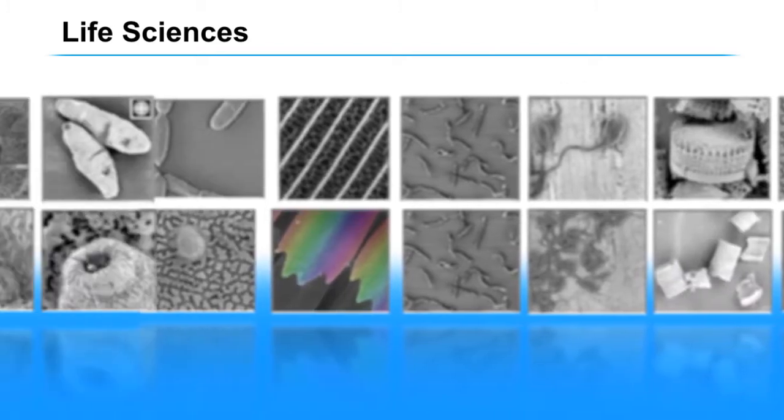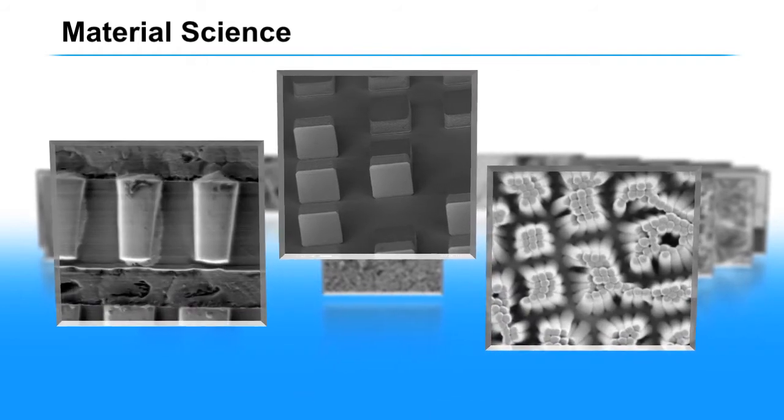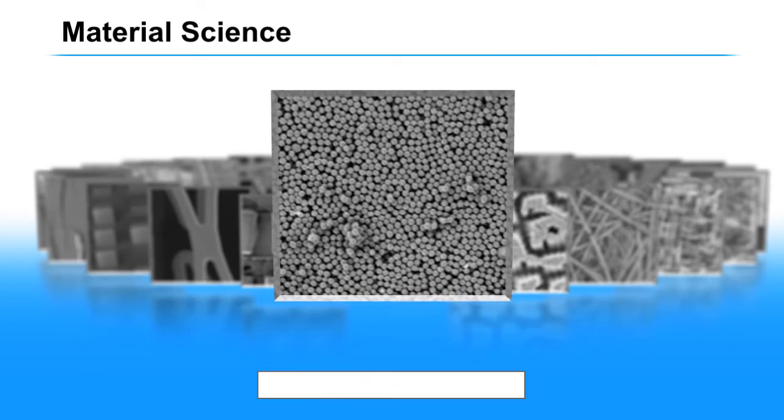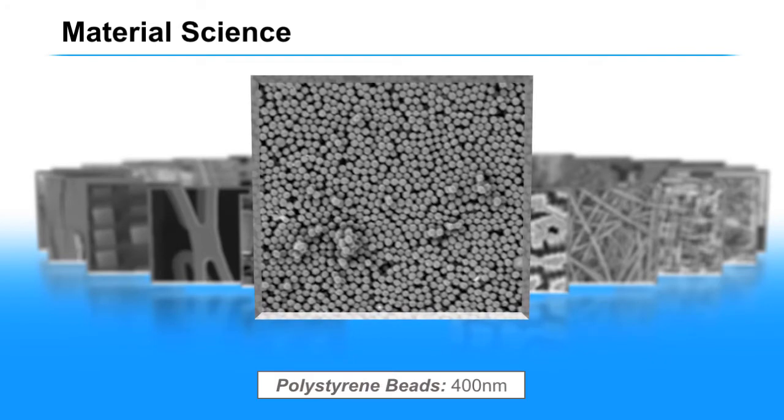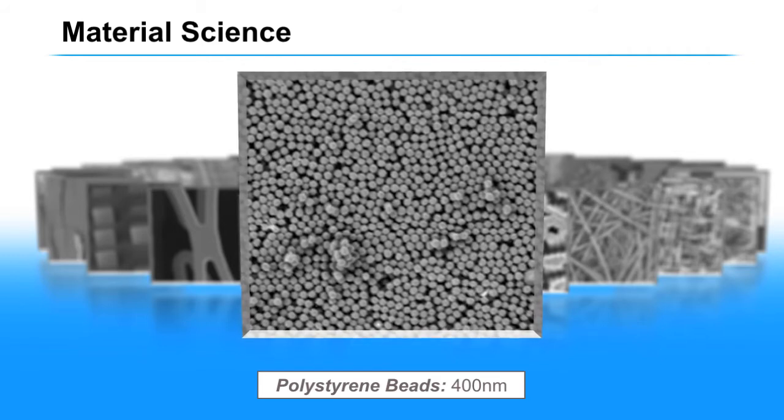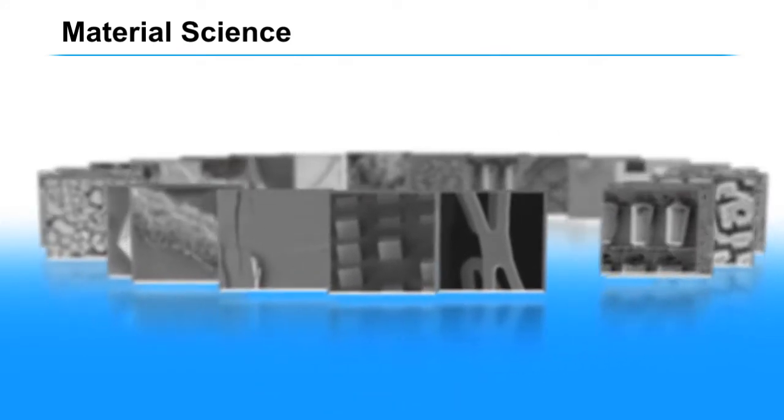The other area where the Agilent Field Emission SEM is ideal is for material science applications, and this is a whole host of applications including polymers, nanotechnology, failure analysis. What we're showing you are some examples of polystyrene beads. Using low voltage technology in particular is built into this SEM, it's easy to get extremely high resolution images of these types of materials.